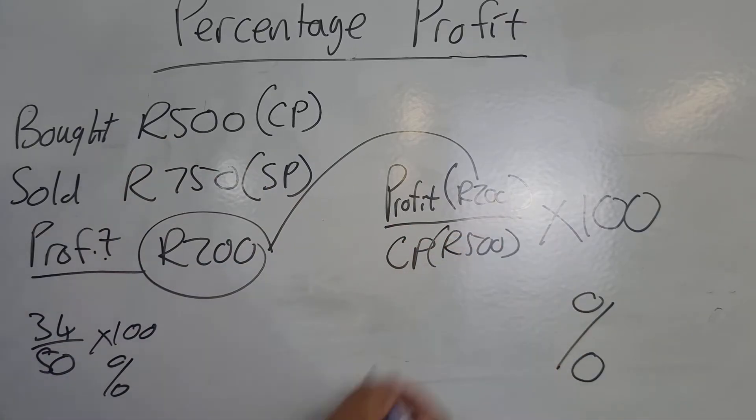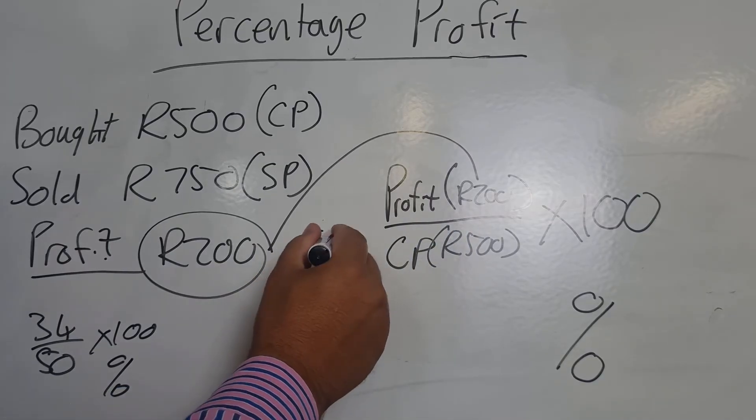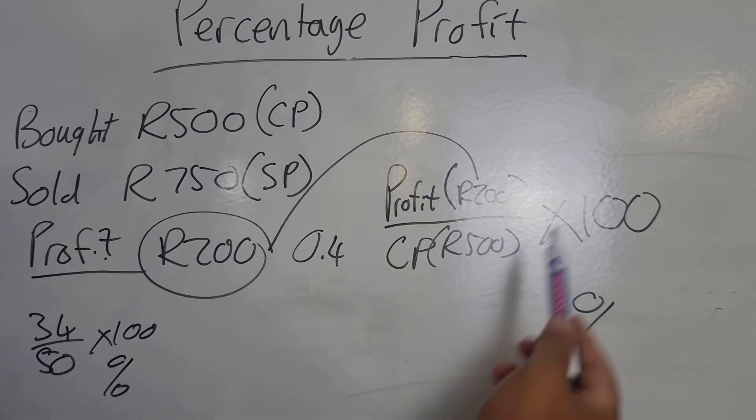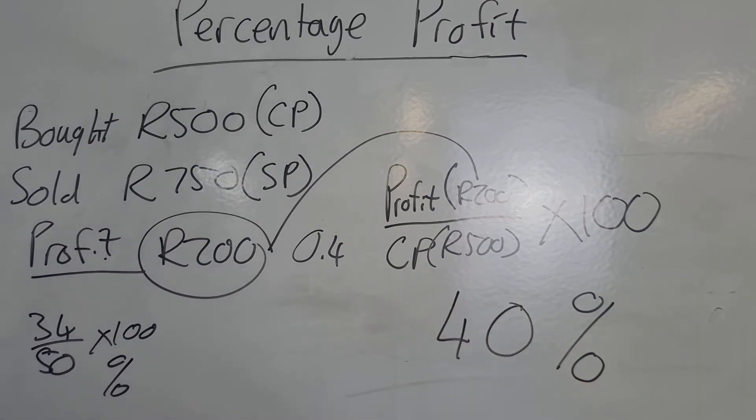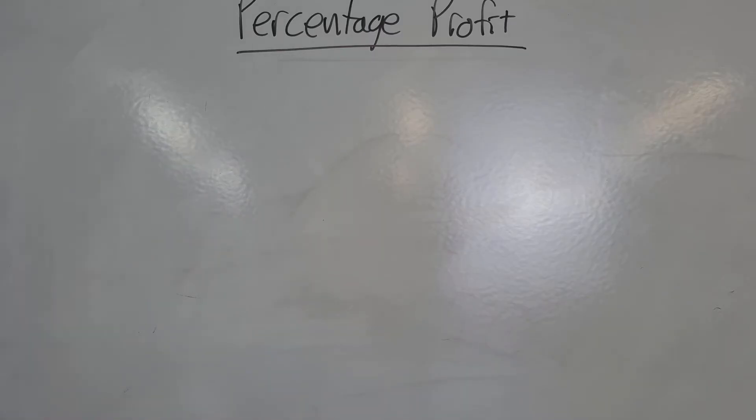So I'm taking my 200, I'm going to divide it by 500, that should be about 0.4. I'm going to multiply that by 100 and I'm ending up with a 40 percent profit.